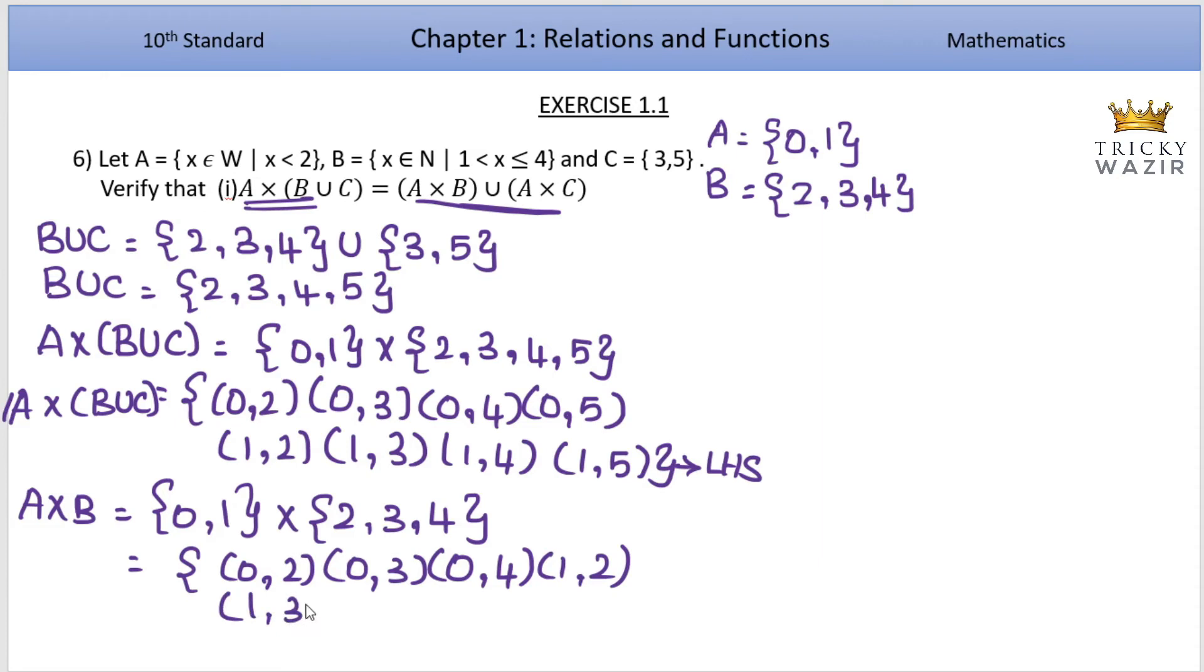A has elements 0,1 cross C has elements 3,5. This gives 0,3, 0,5, 1,3, 1,5.